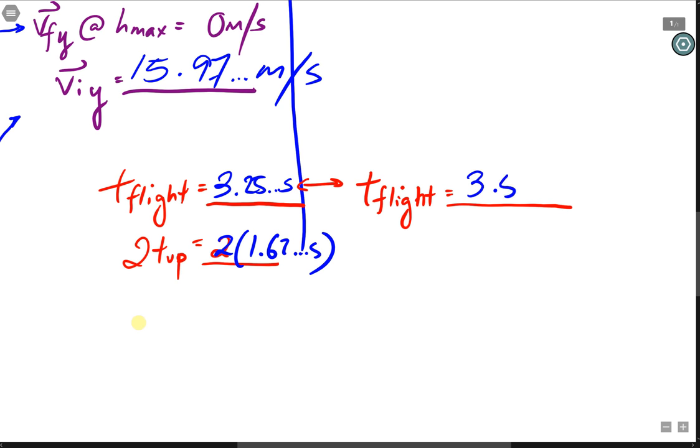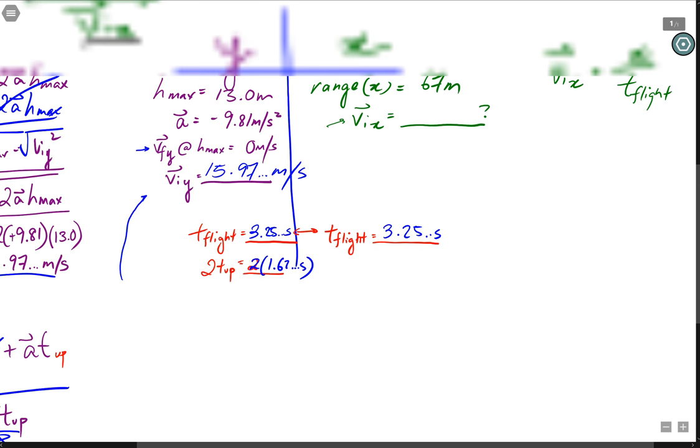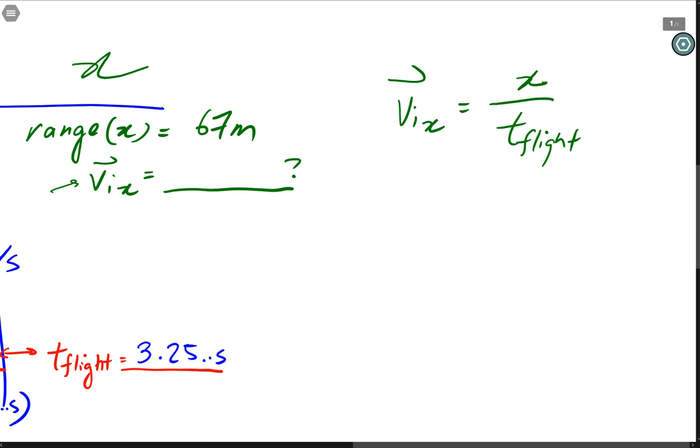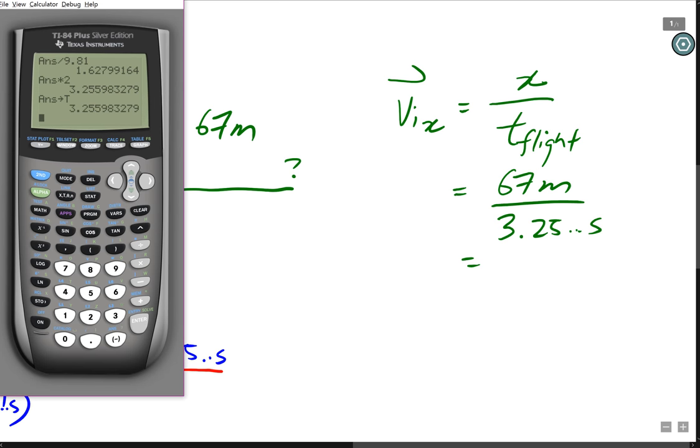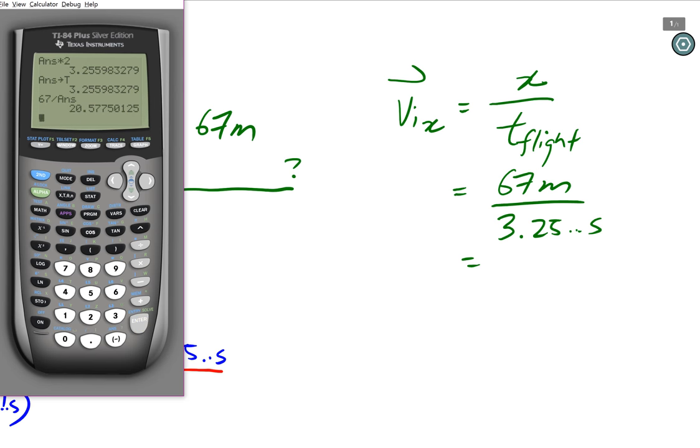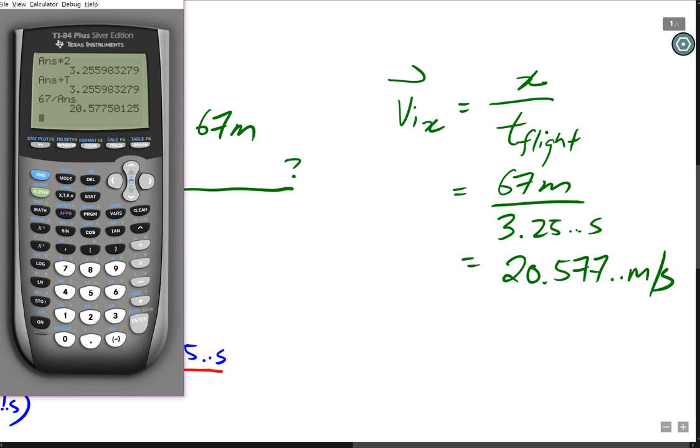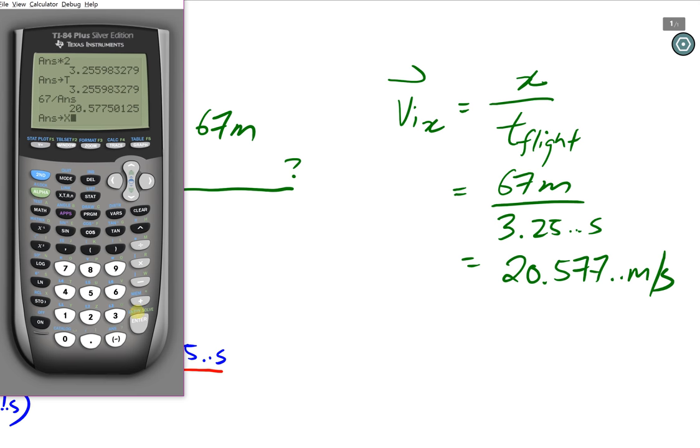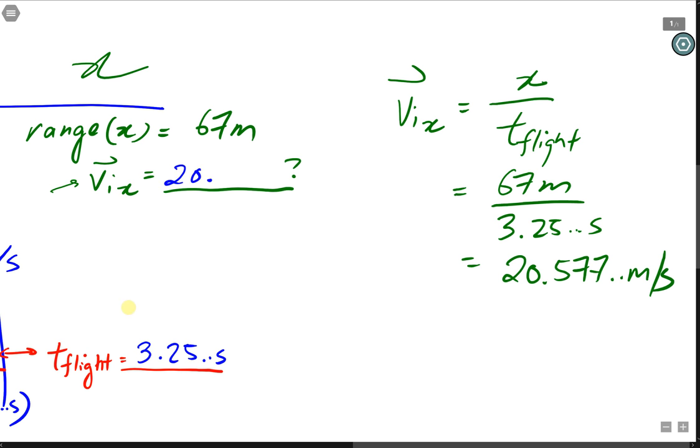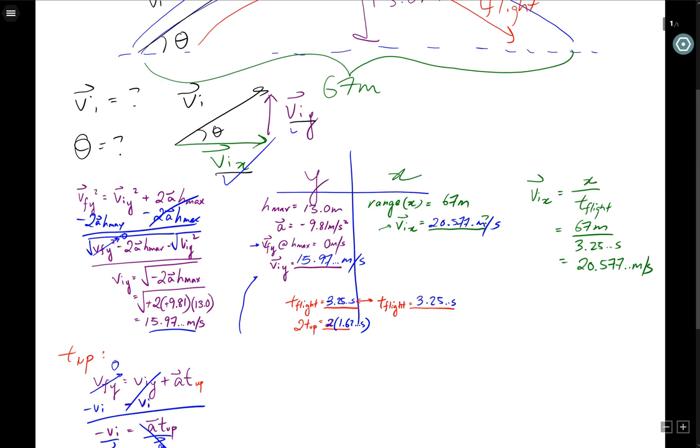I can write this number over here now that I know the time of flight. And because of that, I can now solve for vix, because I have everything. I have a range, which is 67 meters, as well as the time, 3.25 dot dot dot seconds. Putting that into my calculator, I have 67 divided by my answer or my store value t. This gives me 20.577 meters per second. And again, I'm going to store this as x on my calculator, so I know where to find it later. So this is 20.577 meters per second. Beautiful. Now we have vix, viy. We can go ahead to find vi.